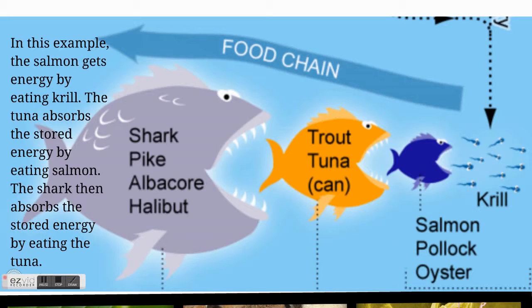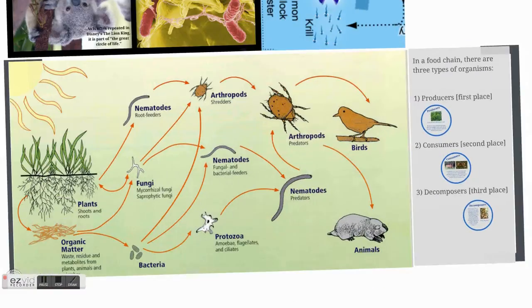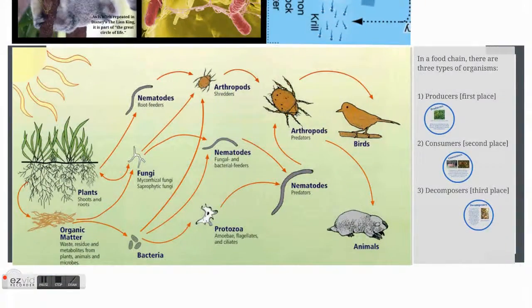Now, in any food chain, there are three types of organisms. There are the producers, consumers, and decomposers. But there's a little twist as we're about to find out.